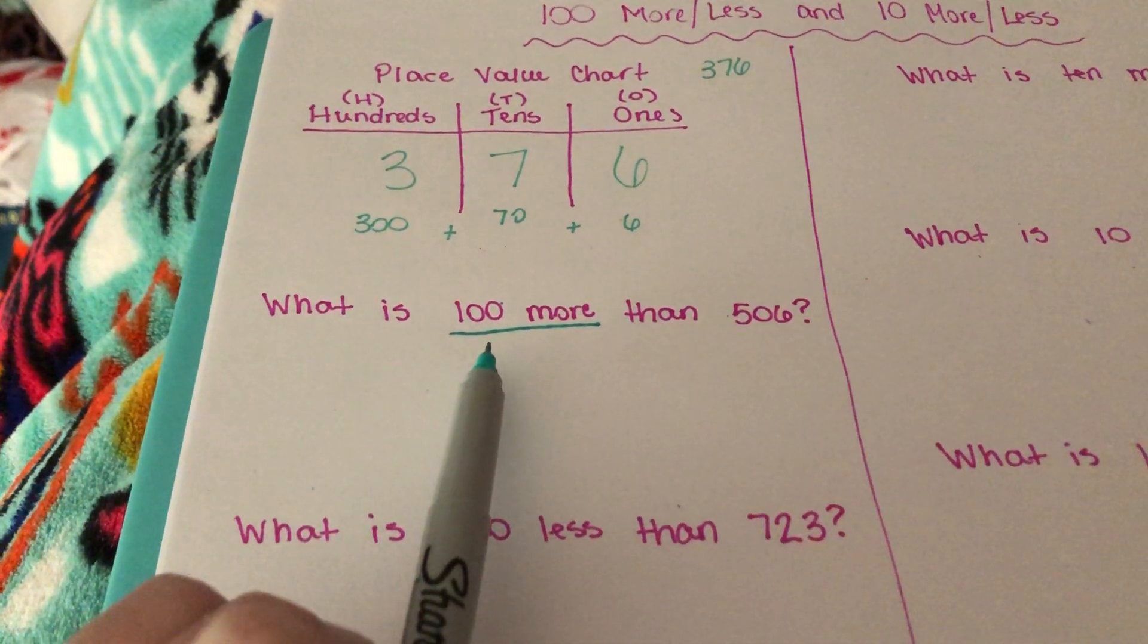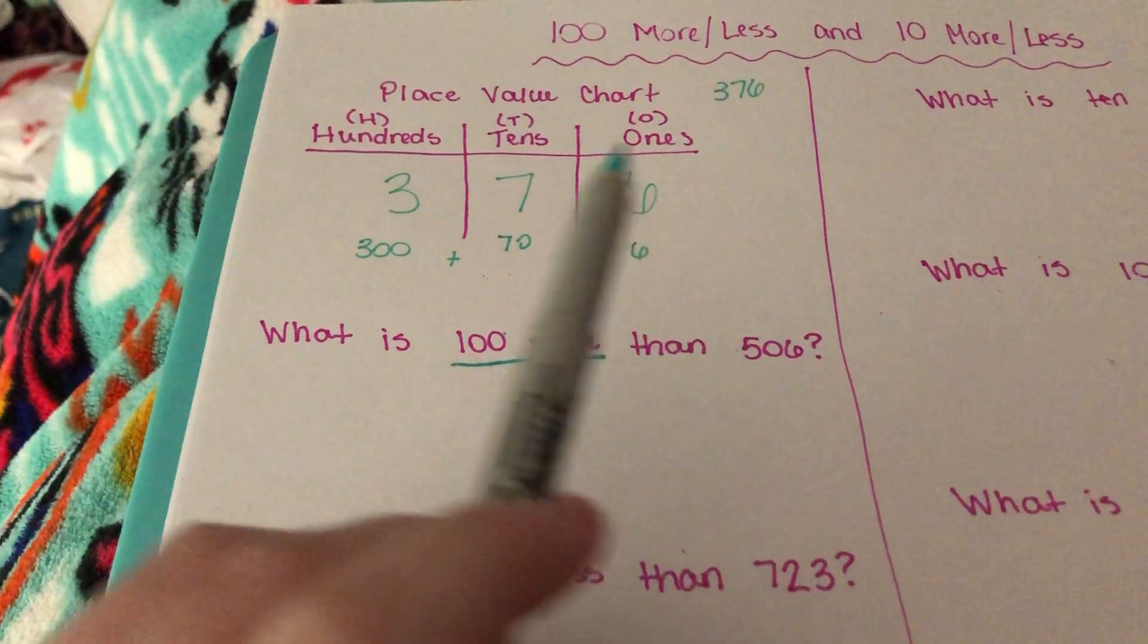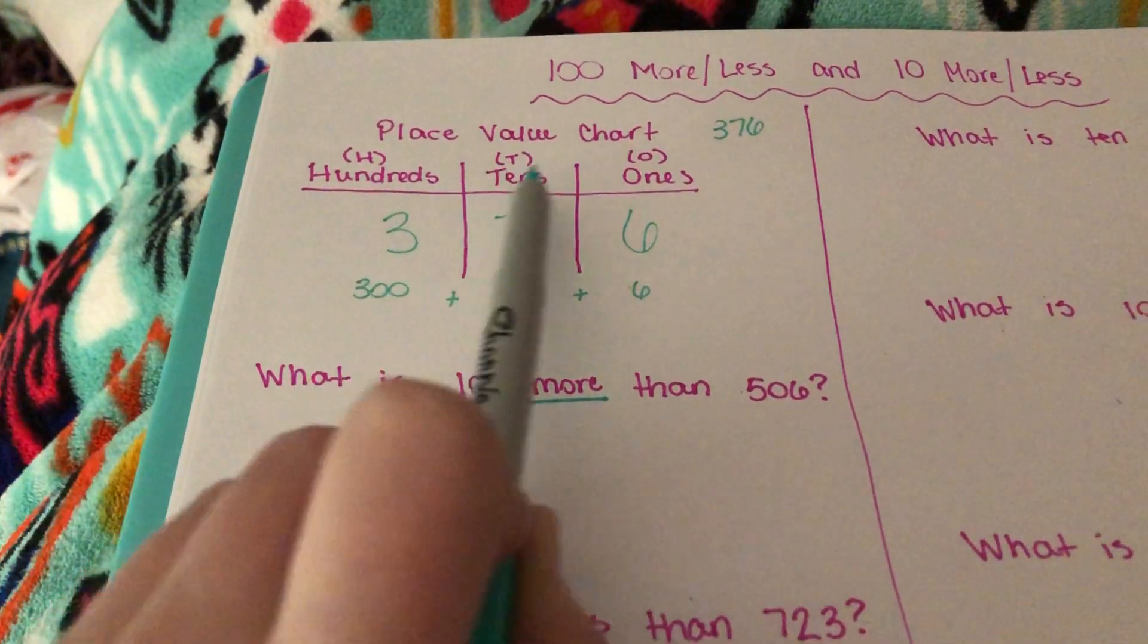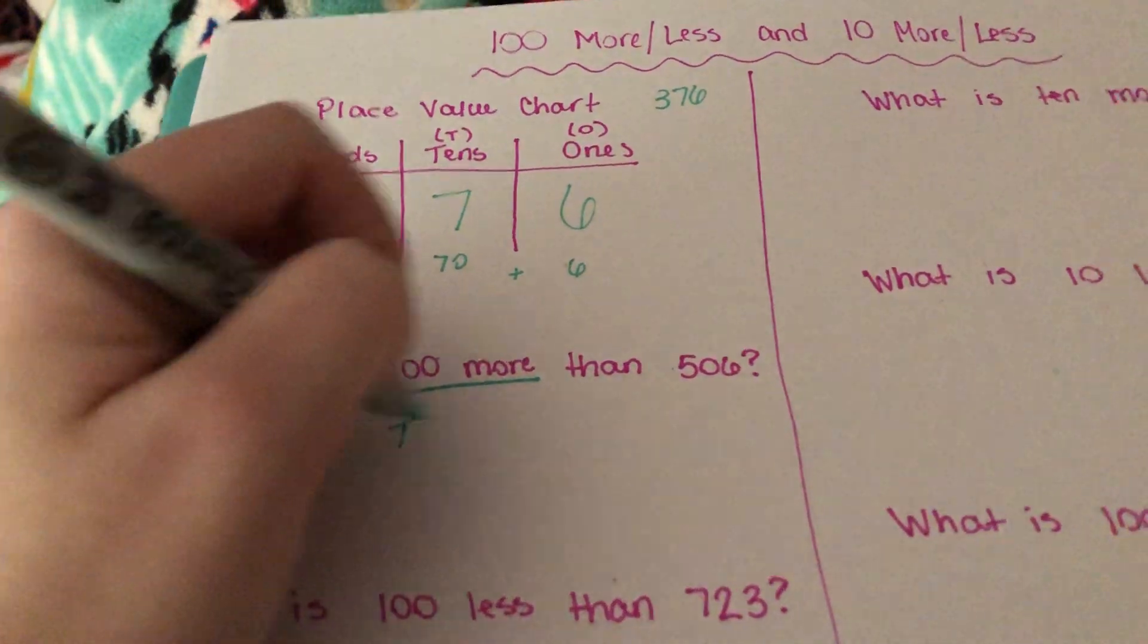So they really need to focus on underlining or highlighting what they want. So this question wants 100 more. So the first thing students are going to do is they're going to draw their place value chart. Now, instead of writing the word hundreds, tens, and ones, we just use H for hundreds, T for ten, and O for ones. So all the kids are going to do is they're going to write an H, a T, and an O,